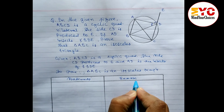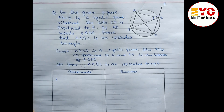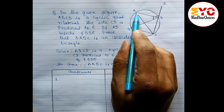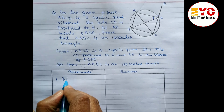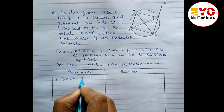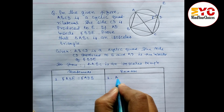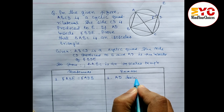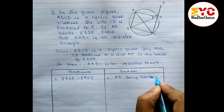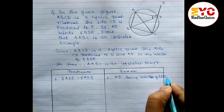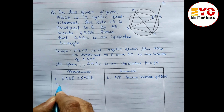Now we write statements and reasons. Statement 1: angle ADE equals angle ADB — both are equal. Reason: AD is the bisector of angle BDE, so AD bisects angle BDE.